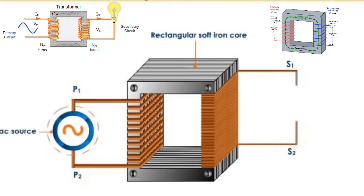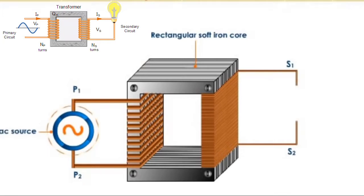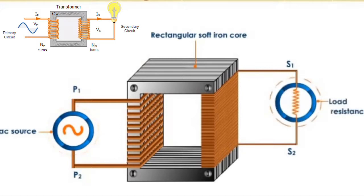The source of alternating EMF that is to be transformed is supplied to the coil P1, P2, which becomes the primary coil. A load resistance is connected to the coil S1, S2, which is the secondary coil, and the output is taken across the load resistance.